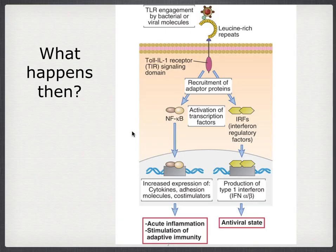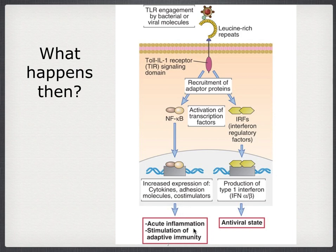When toll-like receptors recognize something, they start to signal inside the cell. The toll-like receptor recruits adapter proteins that activate two main pathways. The first is the NF-κB pathway, which leads to expression of pro-inflammatory cytokines, acute inflammation, and stimulation of adaptive immunity. The second, in the case of viral infection, activates interferon regulatory factors, IRFs, which lead to the production of type 1 interferons — interferon alpha and beta — creating an antiviral state.